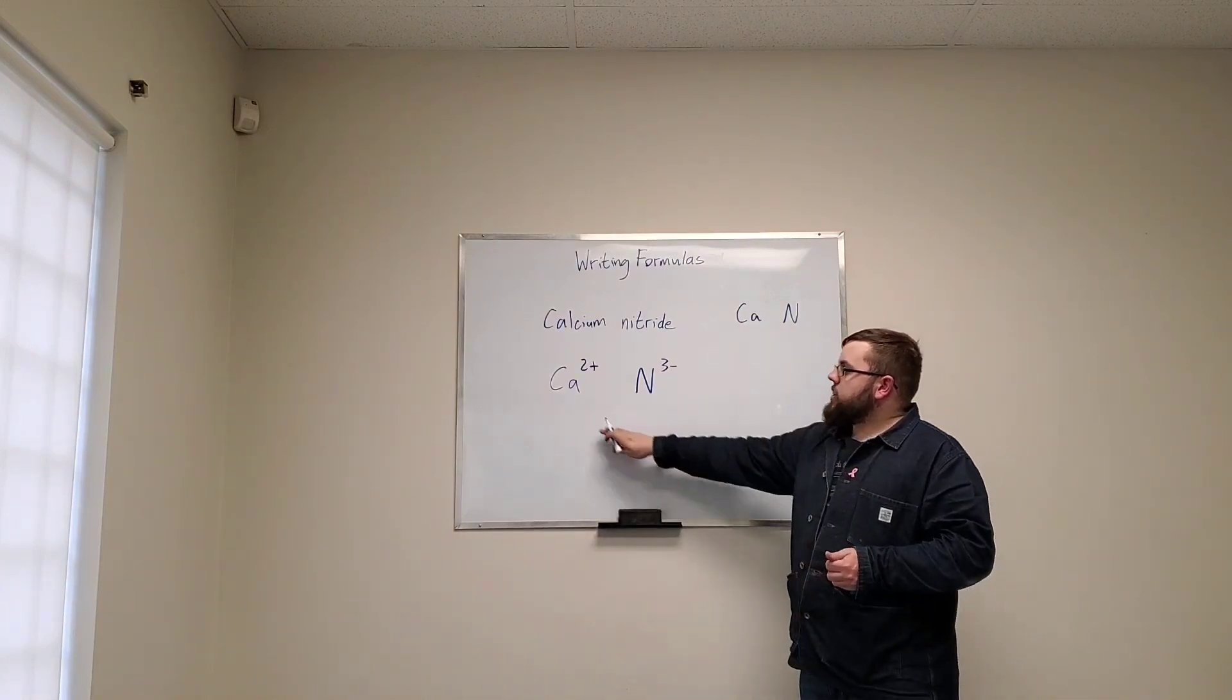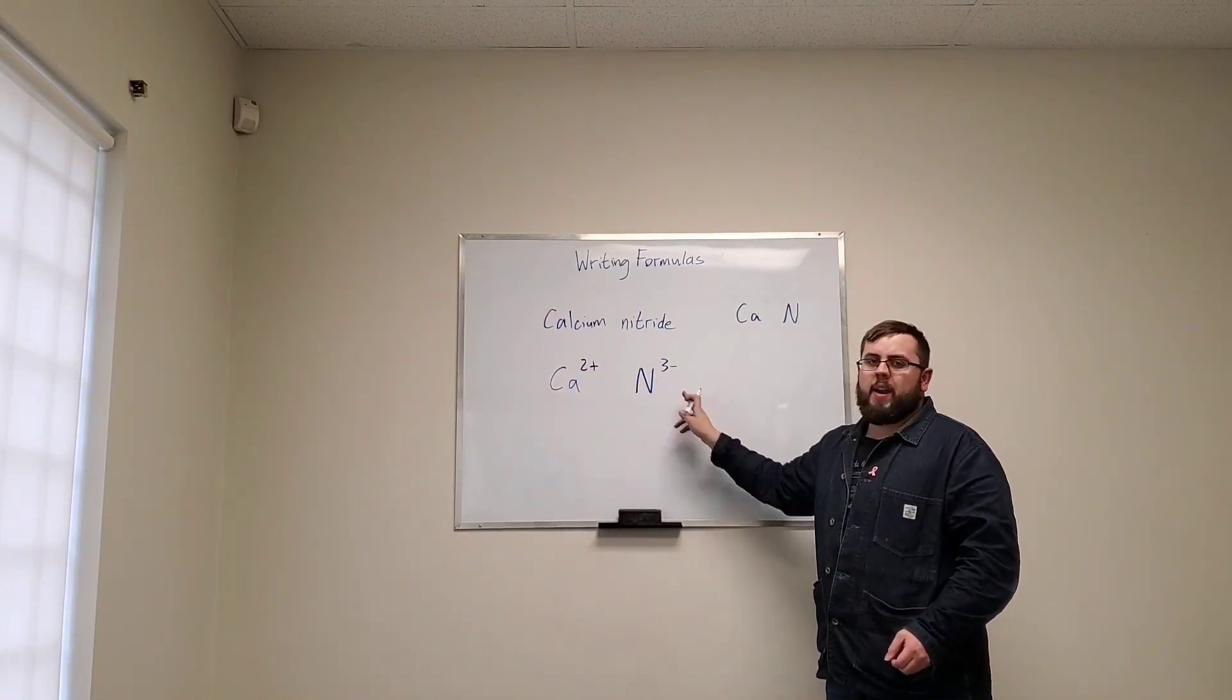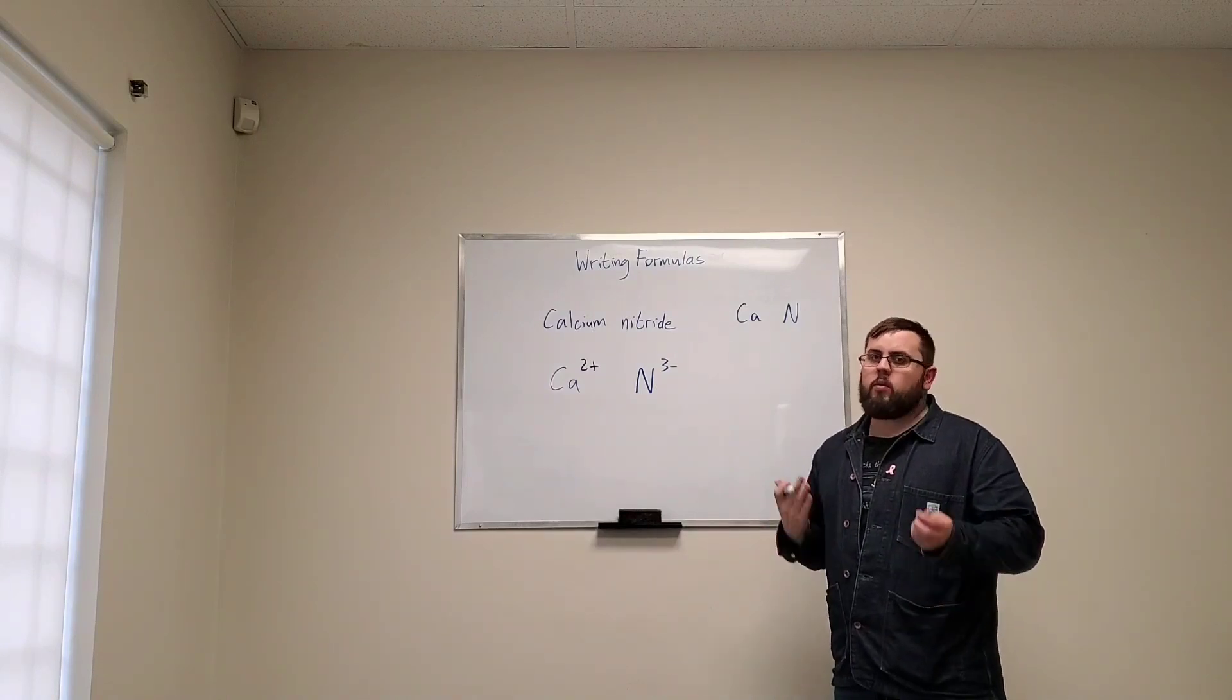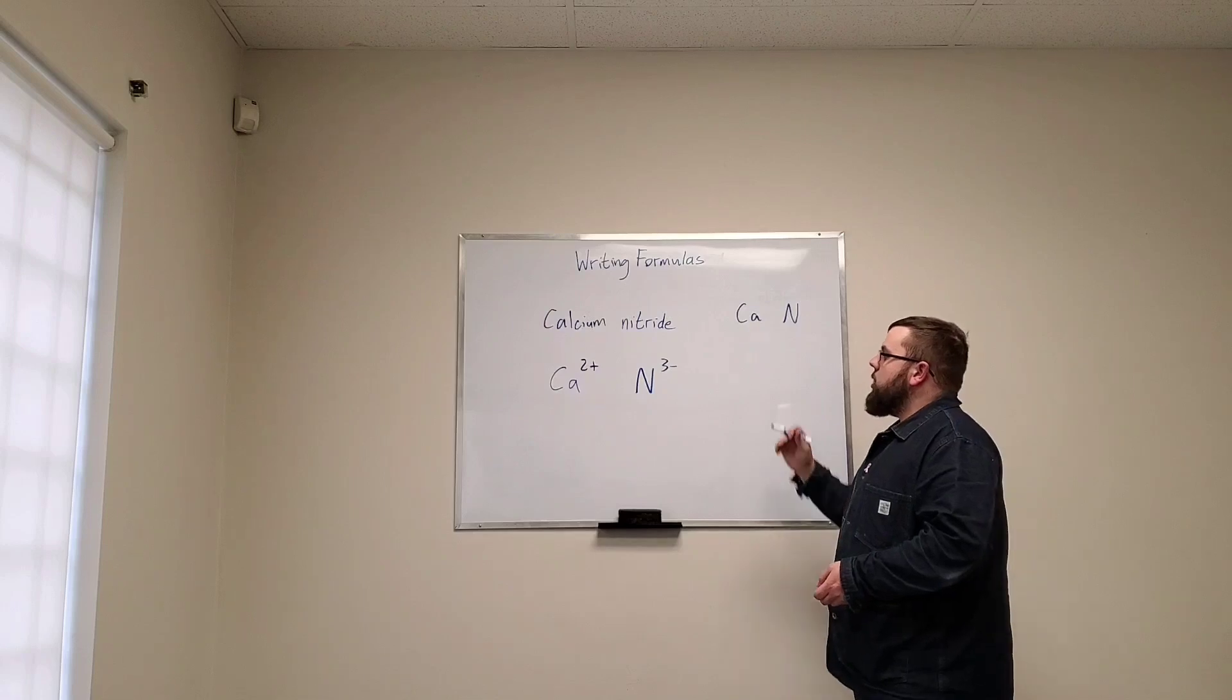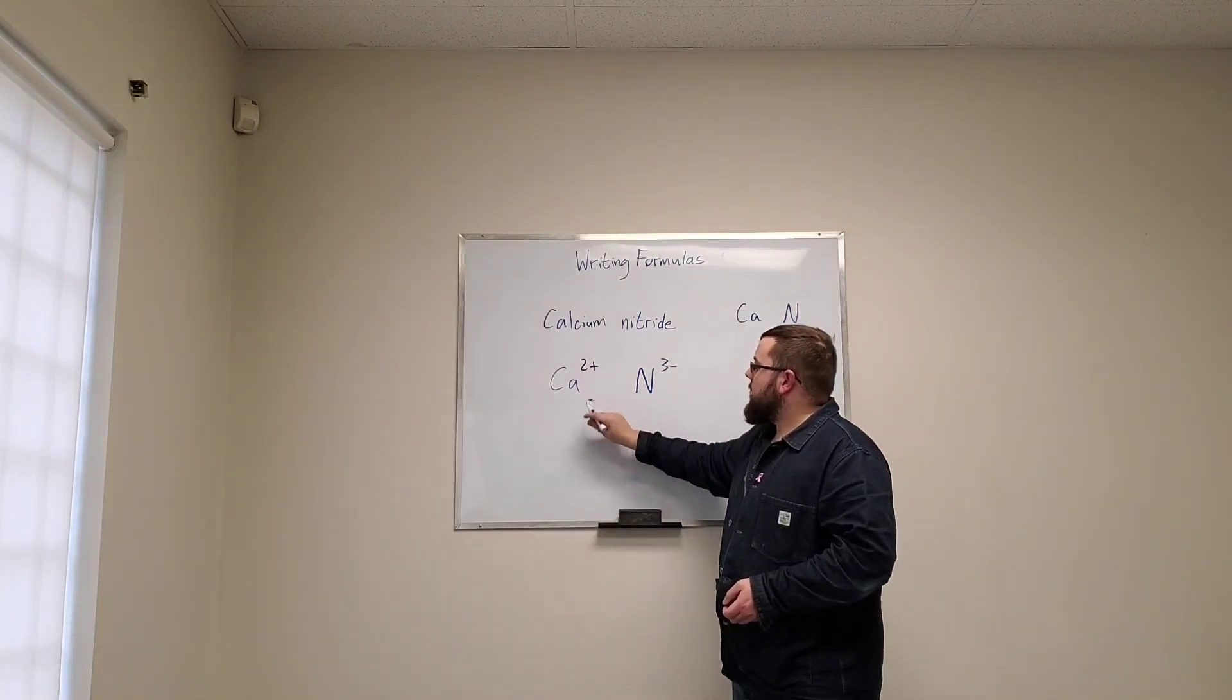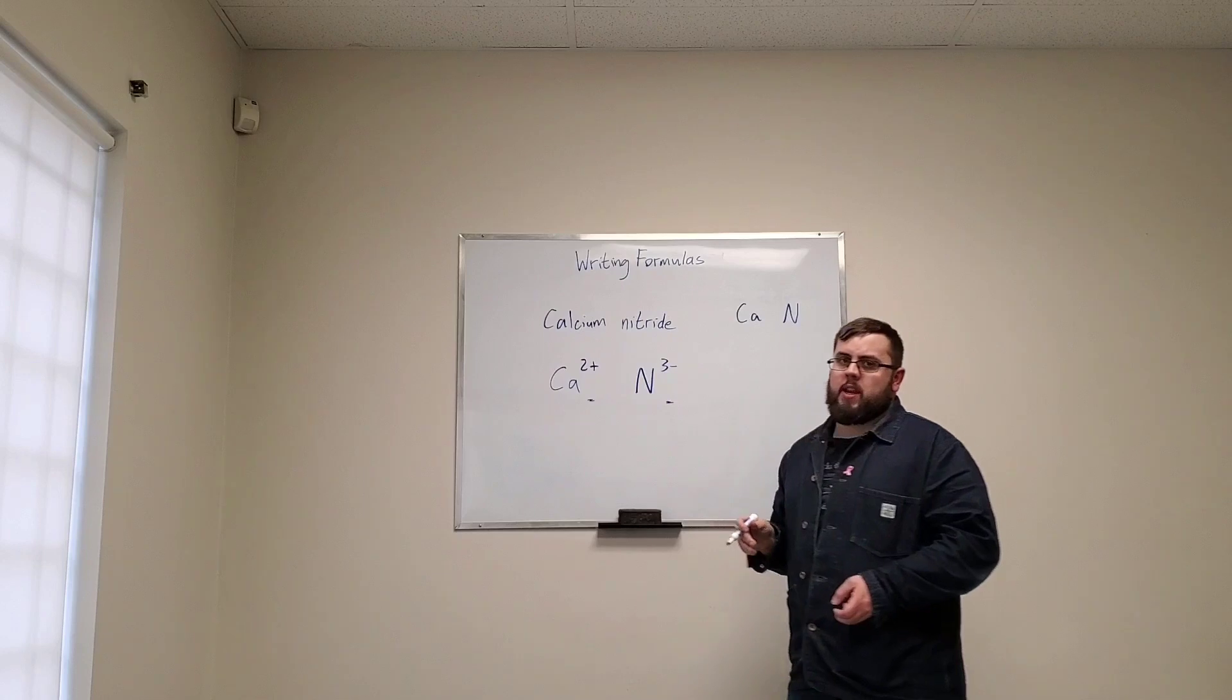So right now if we just have one calcium and one nitrogen, 2 minus 3 is negative 1—we're not balanced, so that's not going to be where we want to end. So the question is, how many here and how many here?